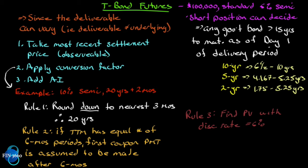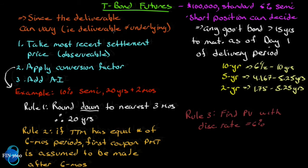There are also 10-year, 5-year, and 2-year futures. For the 10-year, the deliverable is any government bond with a time to maturity on day one of the delivery period of six and a half to ten years. The 5-year is four point one six seven to five point two five years, and the 2-year is one point seven five to five point two five. So there's uncertainty in the deliverable of each of these — the deliverable does not necessarily equal the underlying.